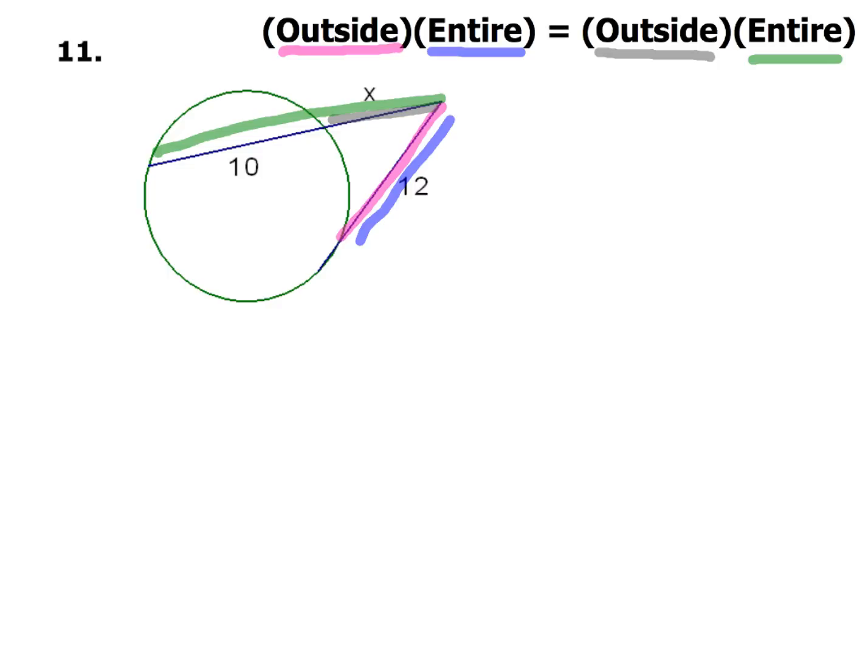All right, so you guys have hung in. Here we go with our last example. Example number 11. We're going to go through and we're going to do this one together. Same kind of stuff as before. Outside times entire equals outside times entire. No big deal. But we're going to run into something a little different here. Check it out. We'll set up our equation. No big deal. I think you guys will be rock solid on that piece. But when we distribute this time, we end up with 144 equals x squared plus 10x.